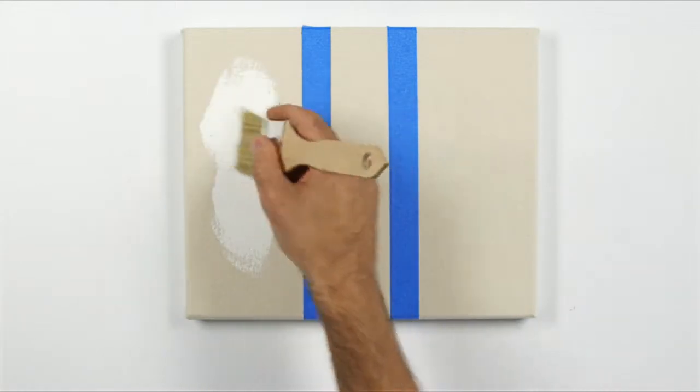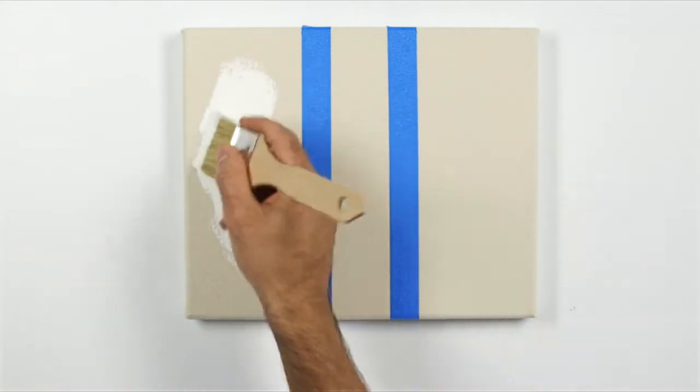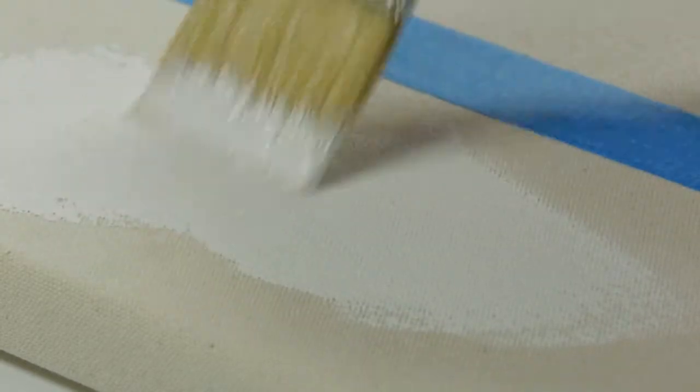If I was using an oil primer, I would first need to coat the surface of the canvas with a size like rabbit skin glue.